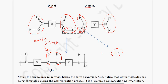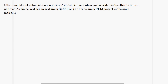You have to be able to show how the diacid and the diamine react to give us nylon. Note that sometimes you may see the amide linkage being drawn in a different way. Other examples of polyamides are proteins.